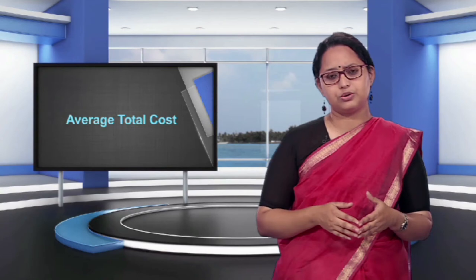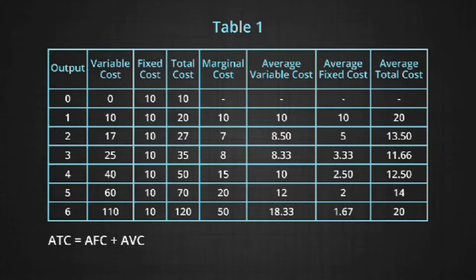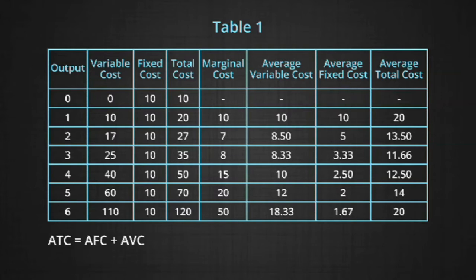What is the relationship between average fixed cost, average variable cost, and average cost? Let us try to solve a hypothetical schedule. Total cost equals the sum of total fixed cost and total variable cost, and marginal cost equals change in total cost divided by delta quantity. There is an algebraic relationship between AFC, AVC, and ATC. For the first unit of output, AVC of 10 and AFC of 10 add up to make ATC of 20. Similarly, for the second unit, AVC of 8.50 and AFC of 5 give ATC of 13.50. Therefore, AC equals AFC plus AVC.